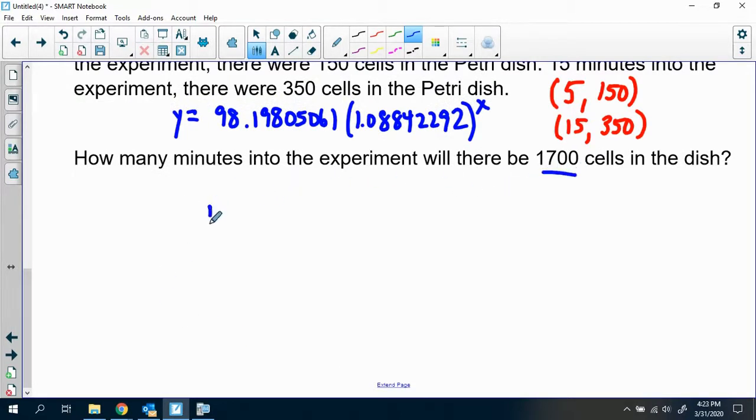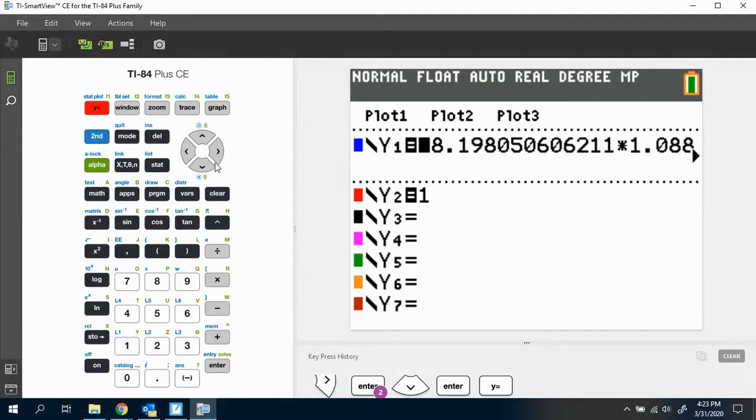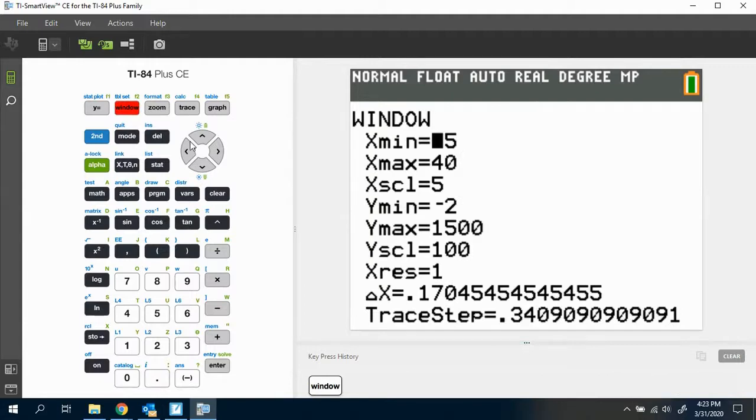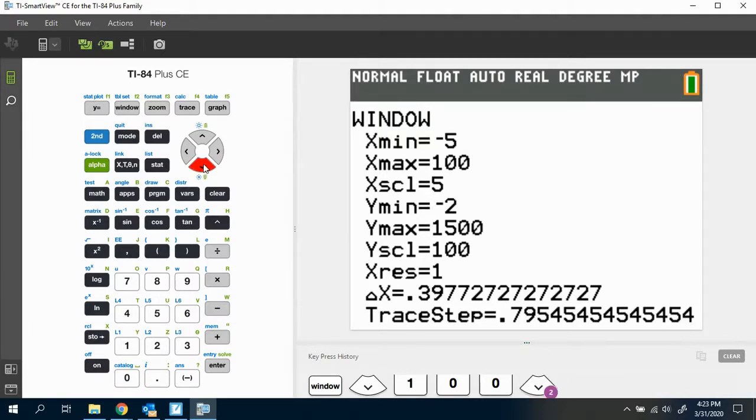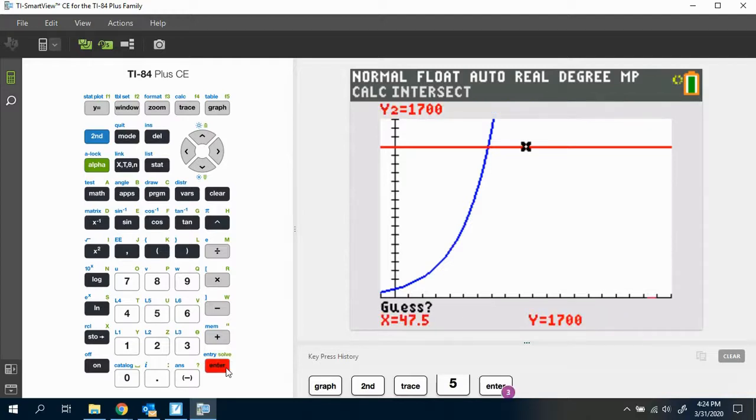How many minutes into the experiment will there be 1,700 cells in the dish? So we would type 1,700 in for y. So we have 98.19805061 times 1.08842292 to the x. And we can solve this by dividing by the 98 thing and taking a log base 1.08. But if this is a calculator problem, which this is, I can just leave that as my y1, make 1,700 my y2, make sure that I have a window that's going to be appropriate. So I would assume that it would happen within the first 100 minutes of the experiment. It's probably going to happen well before that, actually. And then I need my ymax to include 1,700. So let's go up to about 2,000. And then I can second calc, find the intersection. And then just hit enter a couple times, and I'll find the only intersection that there is, which is 33.653.